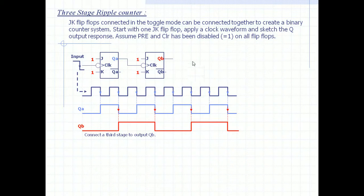Now connect the third stage to output QB. Let us have this third JK flip-flop. The output of QB is given as a clock to this third flip-flop. Again, the same reasoning will take place. The falling edge of QB will trigger QC transition or toggling.